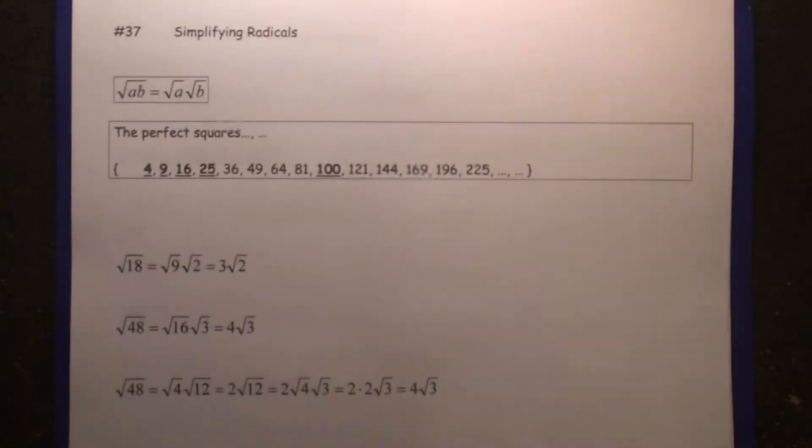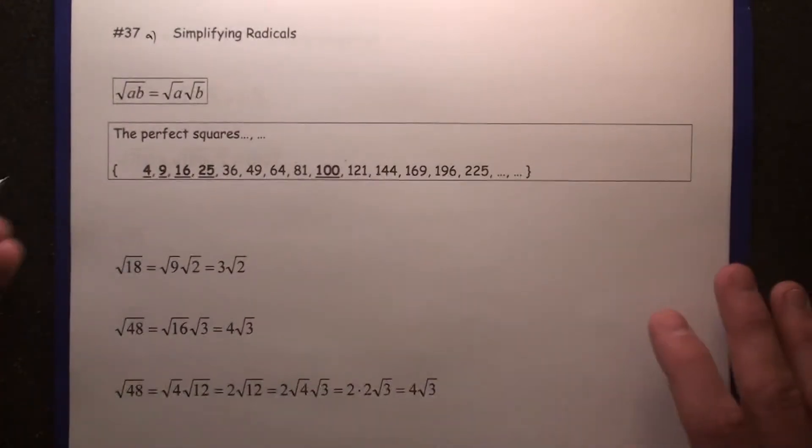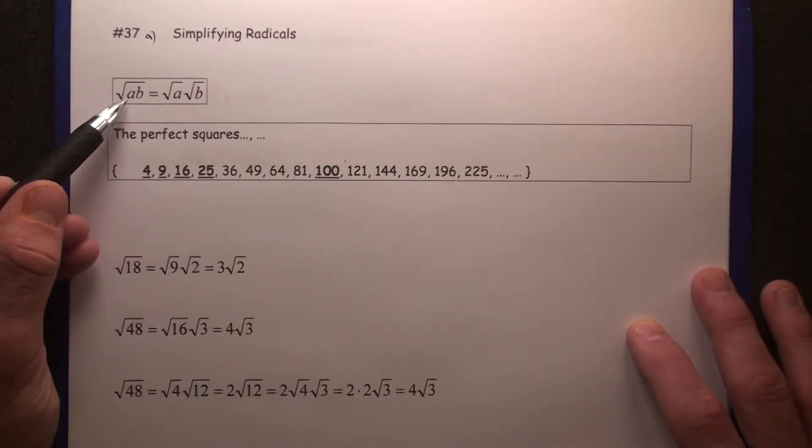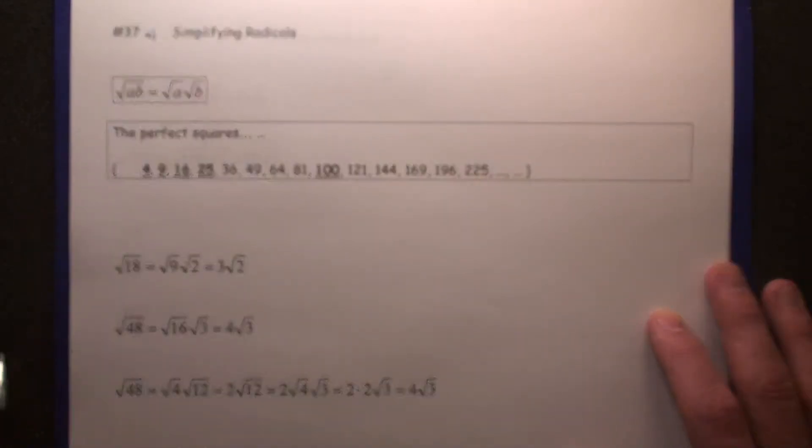Simplifying Radicals. We're going to break this up into two parts. This is going to be part A of video number 37. We have this property here: the square root of AB equals the square root of A times the square root of B. You're going to need to use that for simplifying radicals.